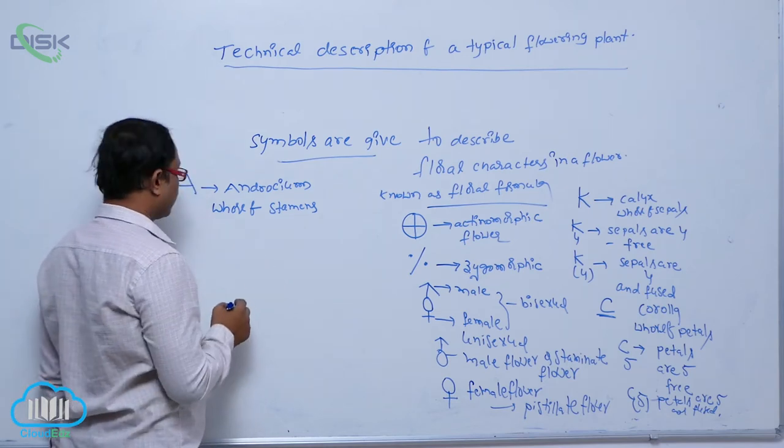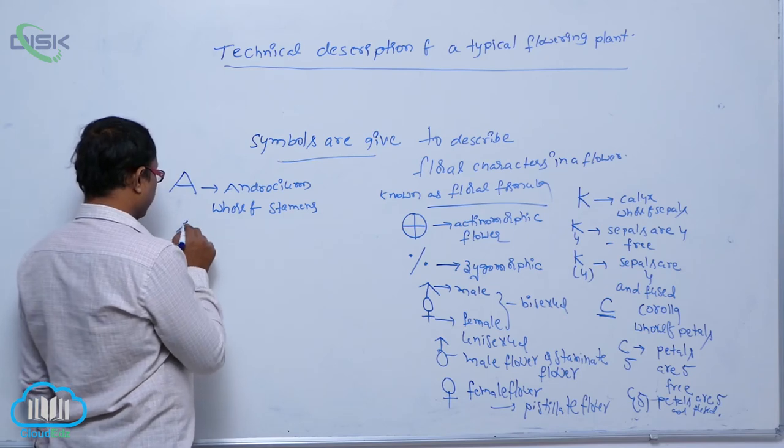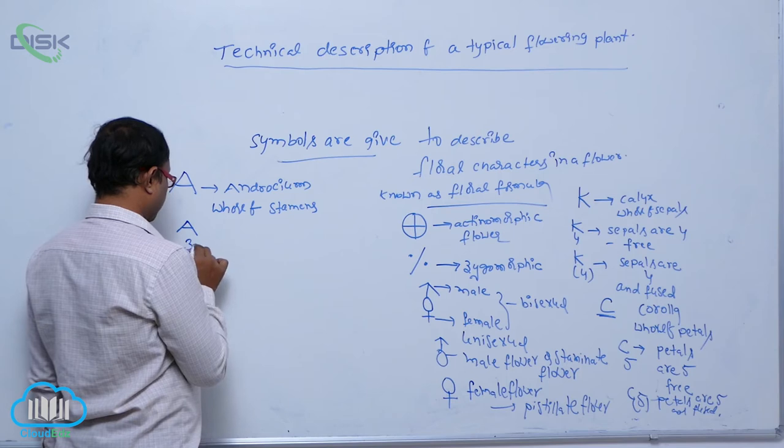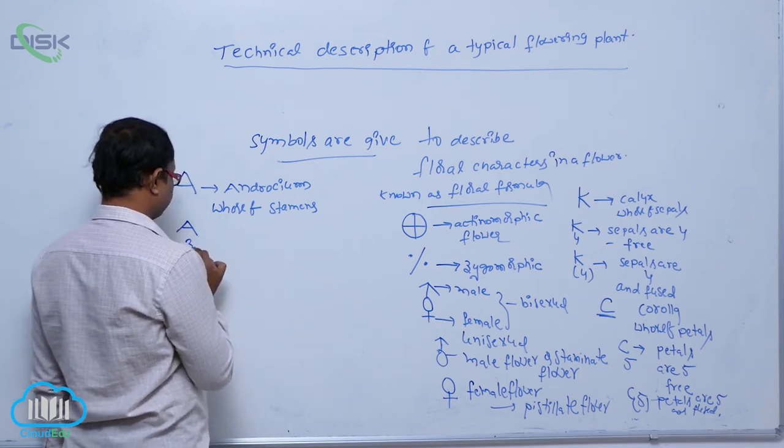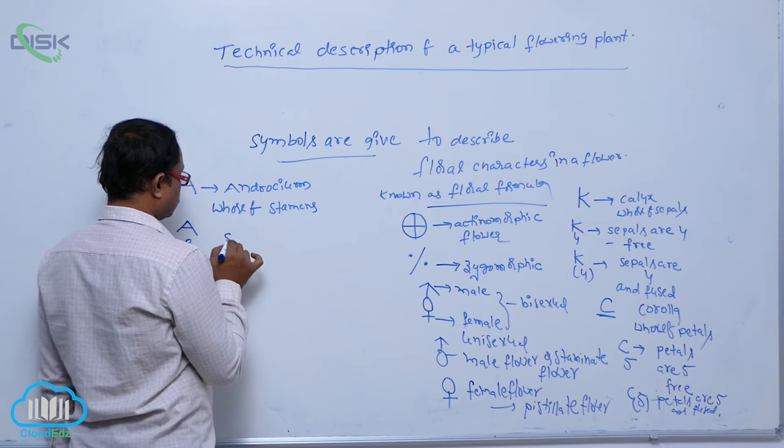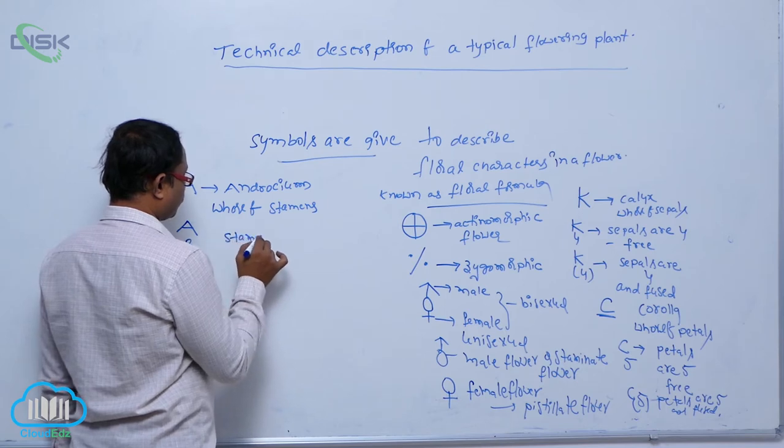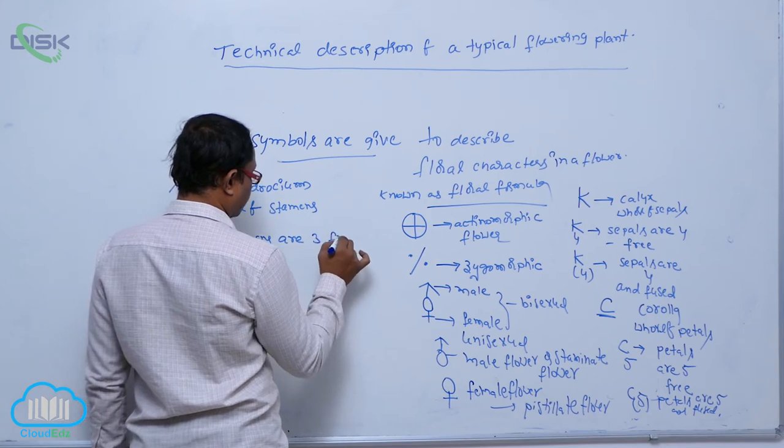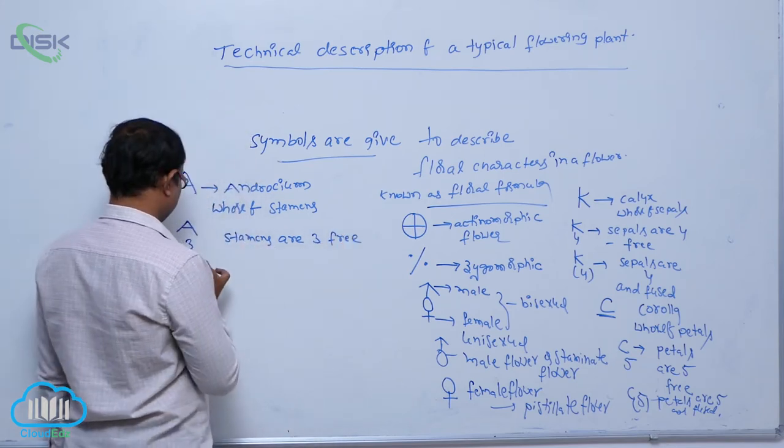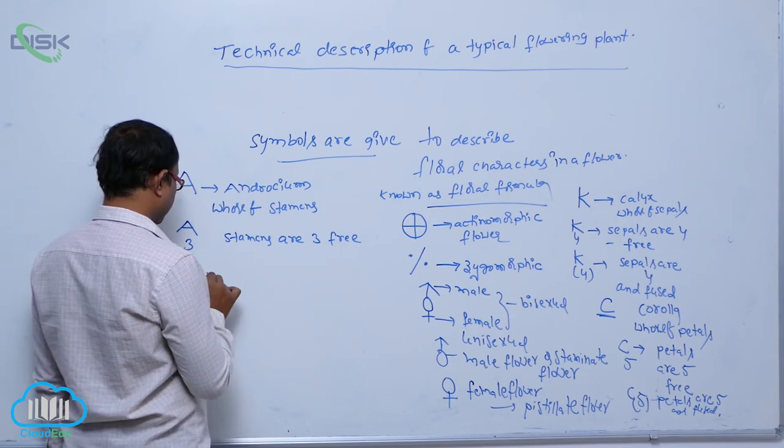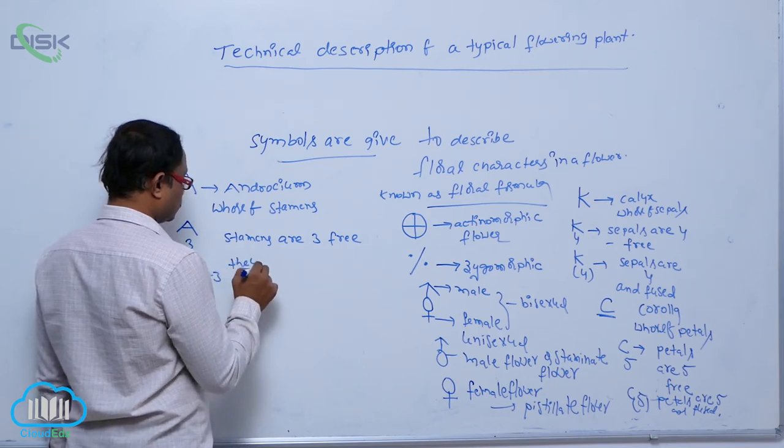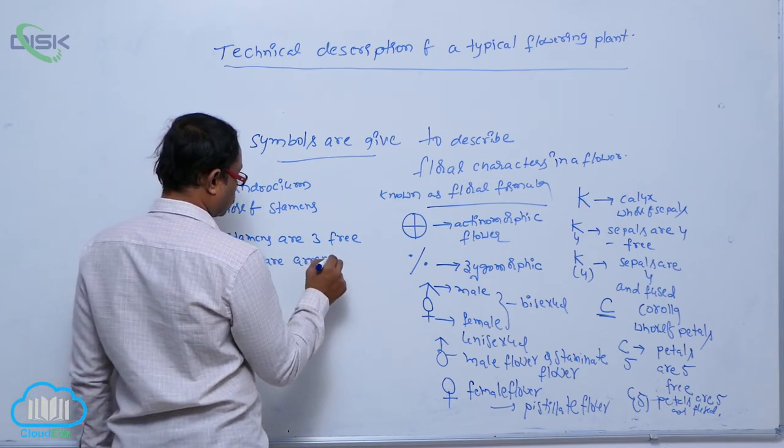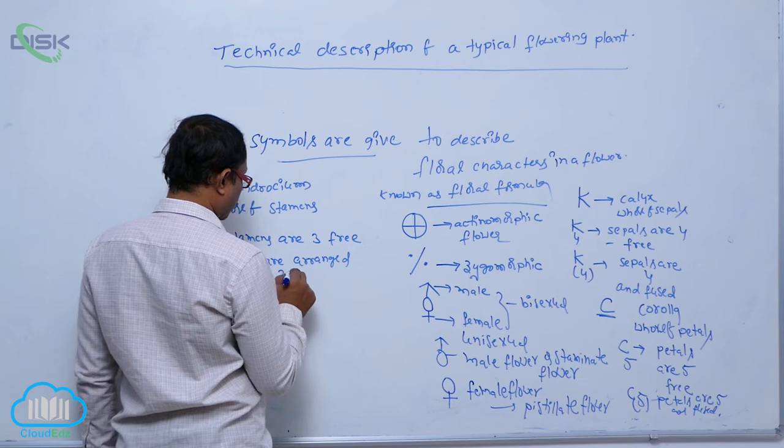It is a male reproductive organ. If A3, it means stamens are three in free condition. If A(3+3), they are arranged in two rows or two whorls.